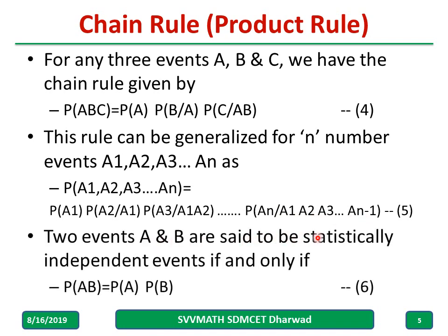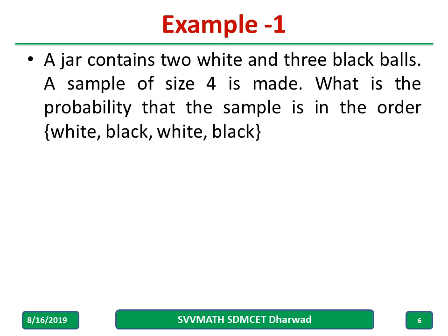Two events A and B are said to be statistically independent if and only if the probability of A and B equals the probability of A into the probability of B.